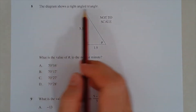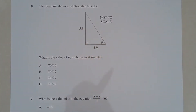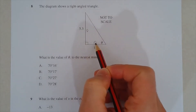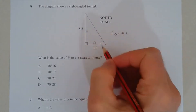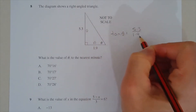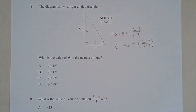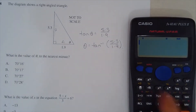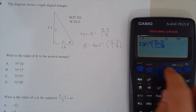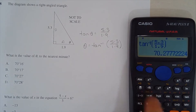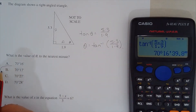Question A: what is the value of theta correct to the nearest minute? This is basic trigonometry. The opposite side is 5.3, adjacent is 1.9, so tan θ = 5.3/1.9. Theta = inverse tan(5.3/1.9) = 70 degrees 17 minutes. Option B.